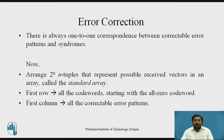For example, if you have 6-tuples, then 2 raised to 6 gives you the standard array size. These codeword vectors are arranged in that array format. In that, the first row contains all the codewords starting with the all-zero codeword, and the first column contains all the correctable error patterns. We will see what these are as we go further.